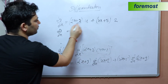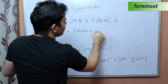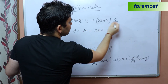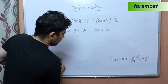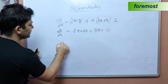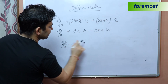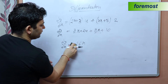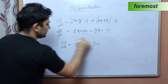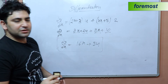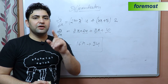Multiplying out: (2x + 3) times 4 gives 8x + 12, and (4x + 5) times 2 gives 8x + 10. Adding these: dy/dx equals 16x + 22. Wait — combining: 8x + 8x = 16x and 12 + 10 = 22, so dy/dx = 16x + 34. This is our required answer using the product rule.